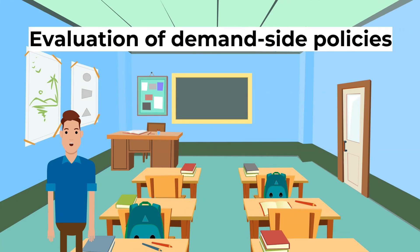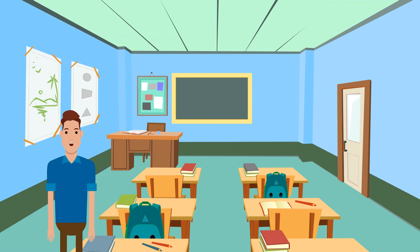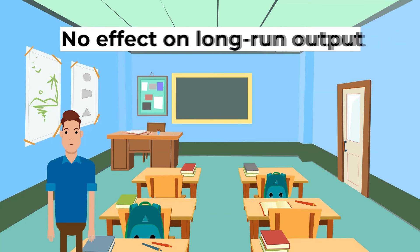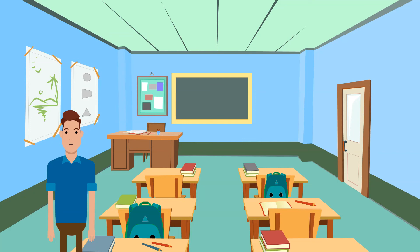Let's evaluate demand-side policies. There are some issues with the individual policies — for example, the effect on the budget following fiscal policy or hyperinflation risks with quantitative easing. However, demand-side policies on the whole have broader issues. Classical economists argue that any demand management, whether fiscal or monetary, will have no effect on long-run output, so supply-side policies should be used. They believe that increasing aggregate demand during a depression will have no effect other than to increase prices. If the economy is in short-run disequilibrium, it will quickly return to long-run equilibrium, whilst Keynesians argue that it can be in long-run disequilibrium for years.